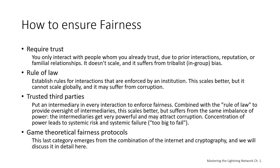From a required trust perspective, you only interact with people you already trust due to prior interactions, reputation, or family relationships. This works well enough at a small scale, especially within families and small groups, but it doesn't scale and suffers from tribal or in-group bias. Rule of law involves establishing rules for interactions enforced by an institution like a court system. This scales better, but cannot scale globally due to differences in customs and traditions, as well as inability to scale enforcement institutions. One side effect is that institutions become more powerful as they grow, which can lead to corruption.